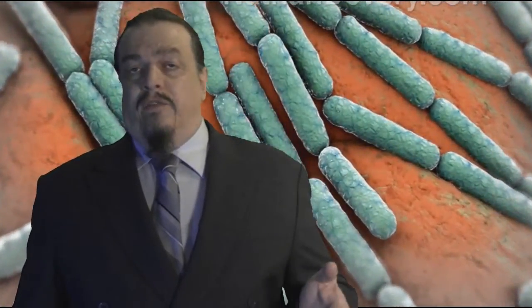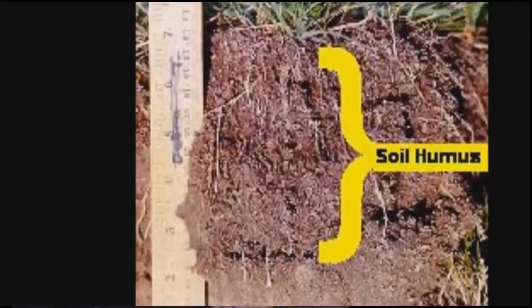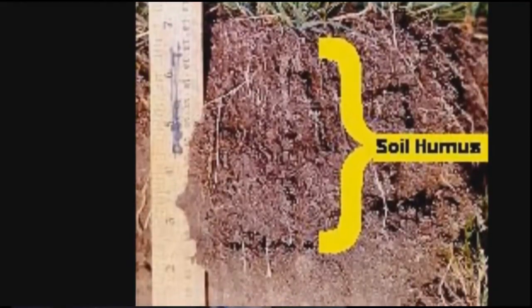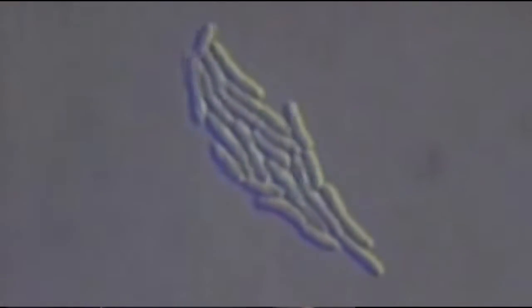Bacteria and archaea are the most abundant and diverse groups of life on earth. They inhabit all of earth's ecosystems, even where most other living things would have problems, like in the intestinal tracts of animals and in rocks deep underground. There are approximately 50 million bacterial organisms in a single gram of typical surface soil. The global bacterial biomass exceeds that of all plants and animals and accounts for one half of the mass of all living things on earth.